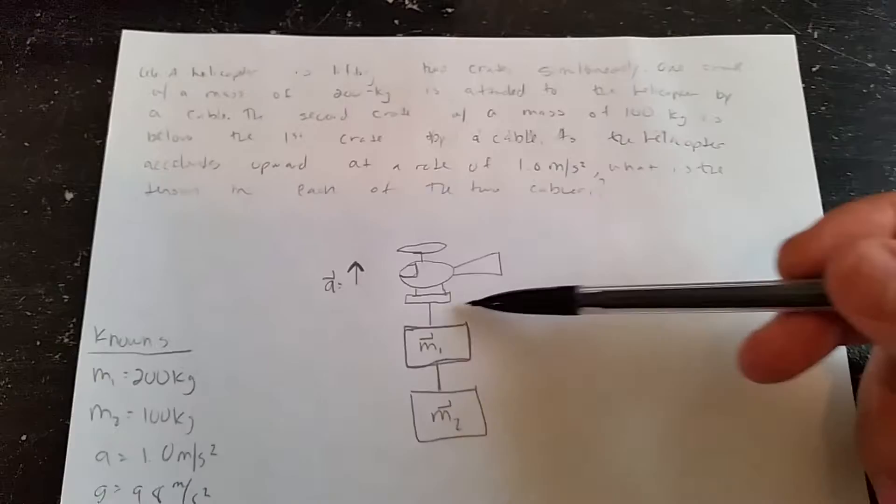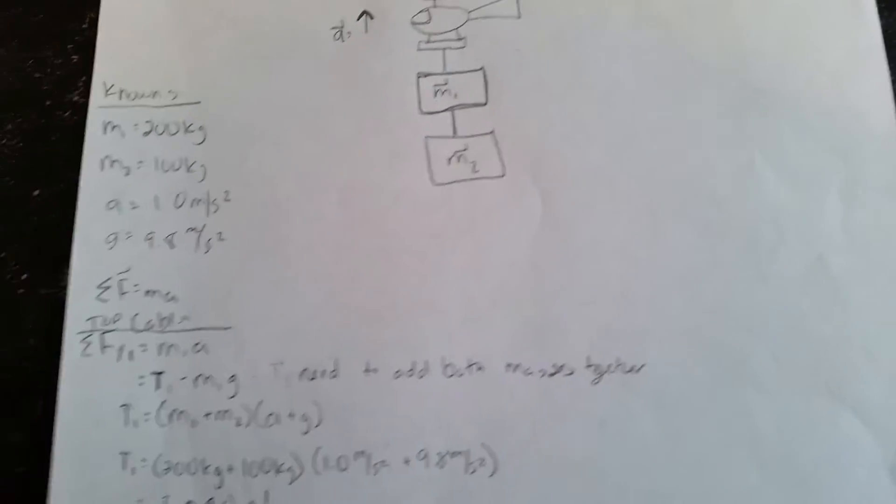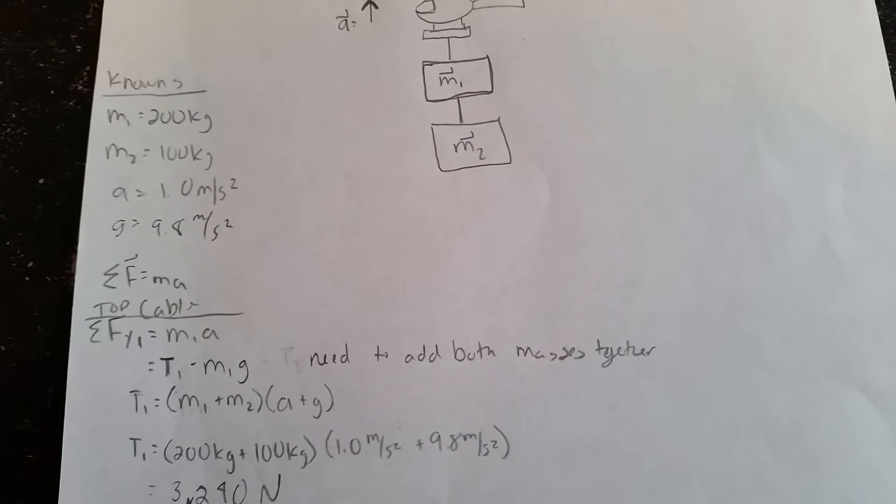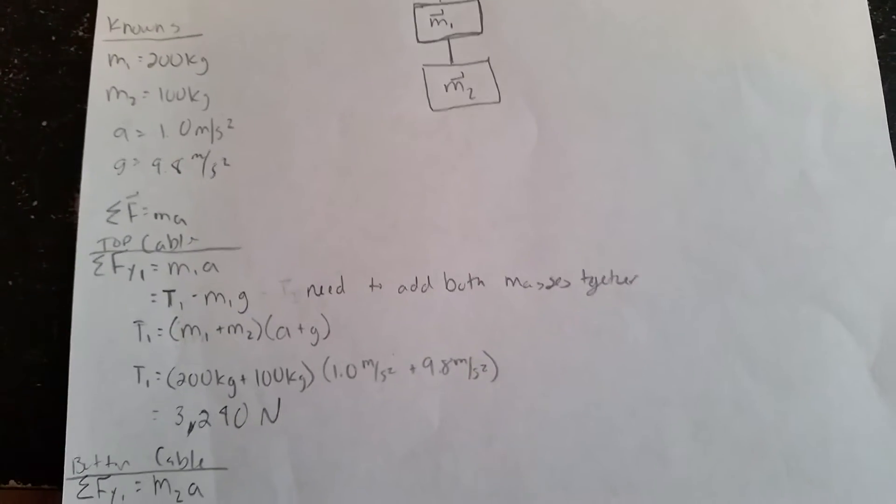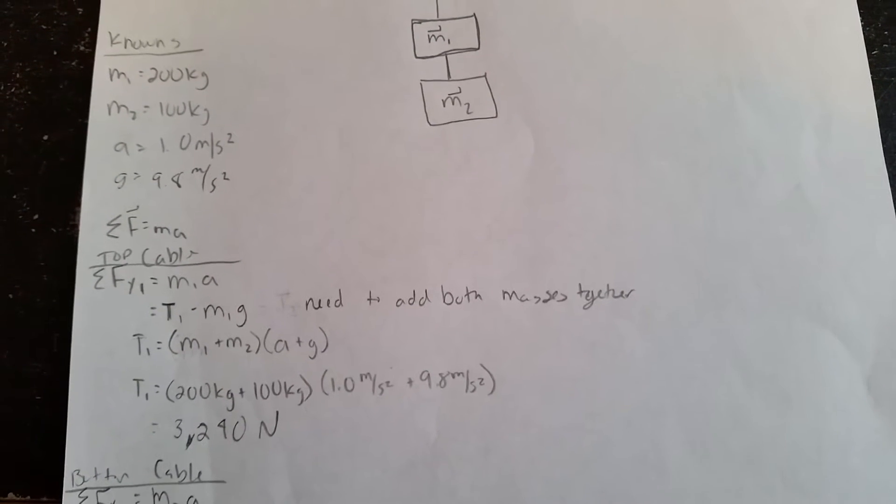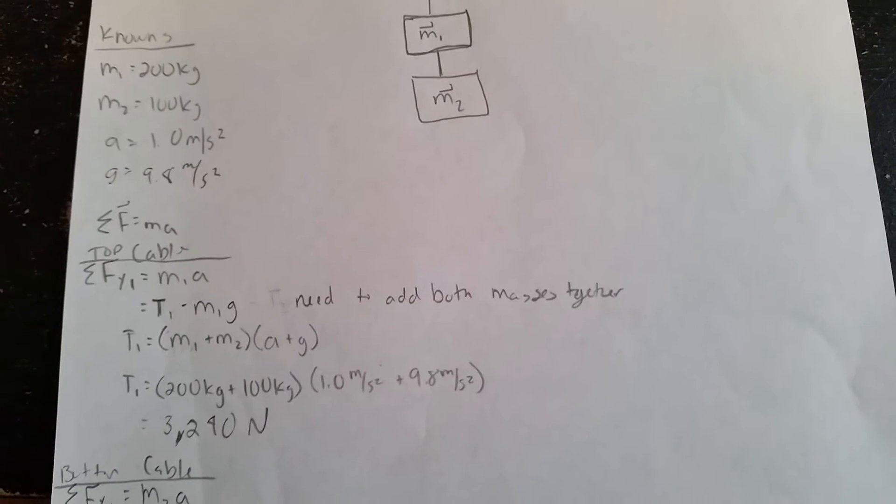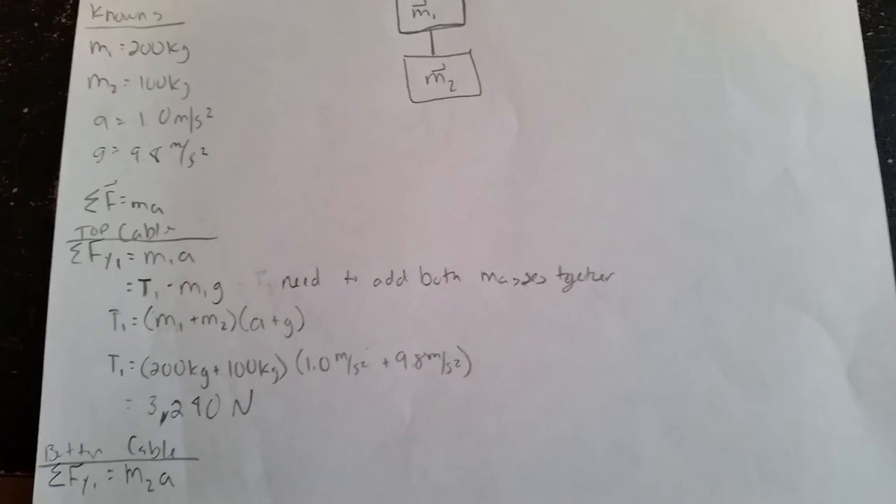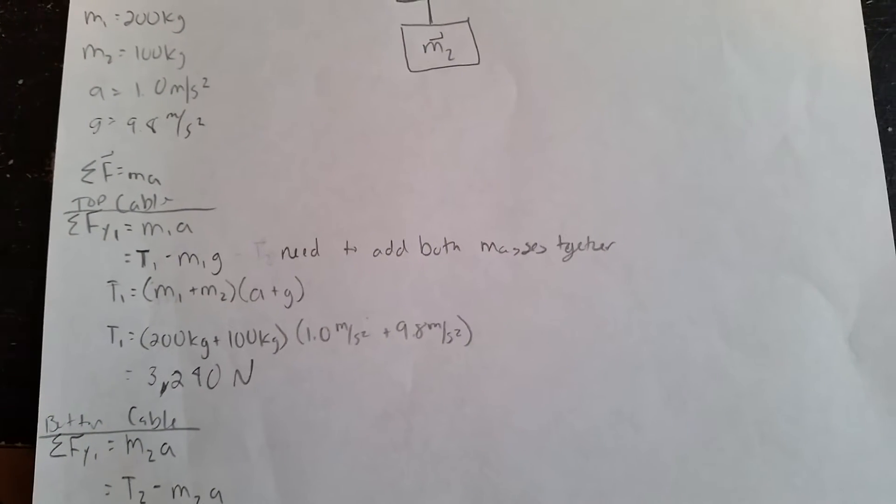All right, so the first thing I do, I'm going to find this tension right here between the helicopter and m1. So what I did was I'm using the summation of F is equal to m times a, which is Newton's second law. So being that it's in the y direction, I get my formula summation of F of y one is equal to m1 times a.